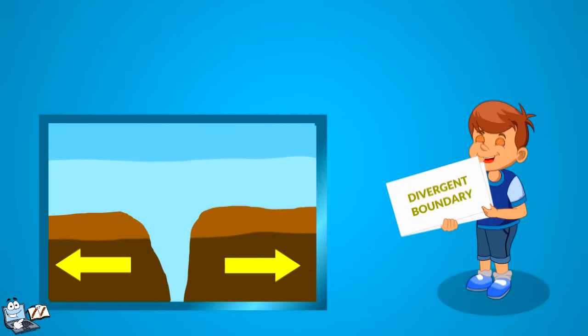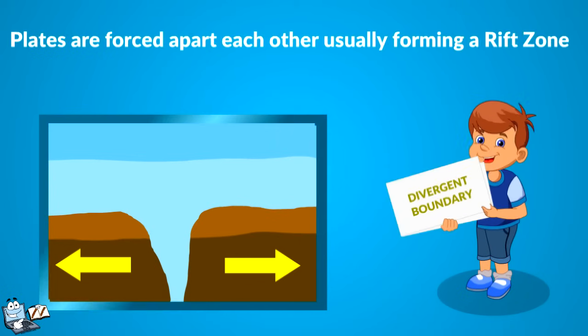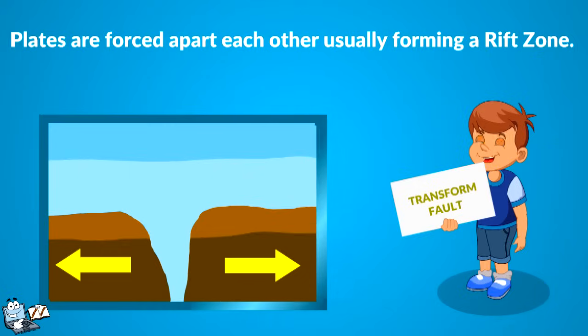The second one is the divergent boundary. In this, plates are forced apart from each other, usually forming a rift zone.